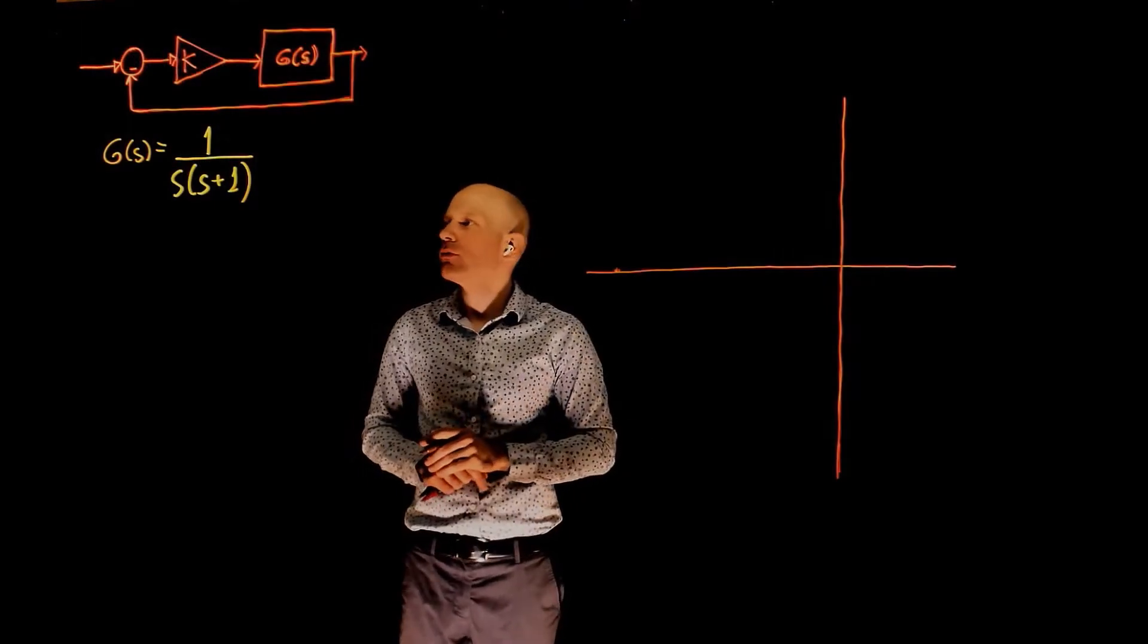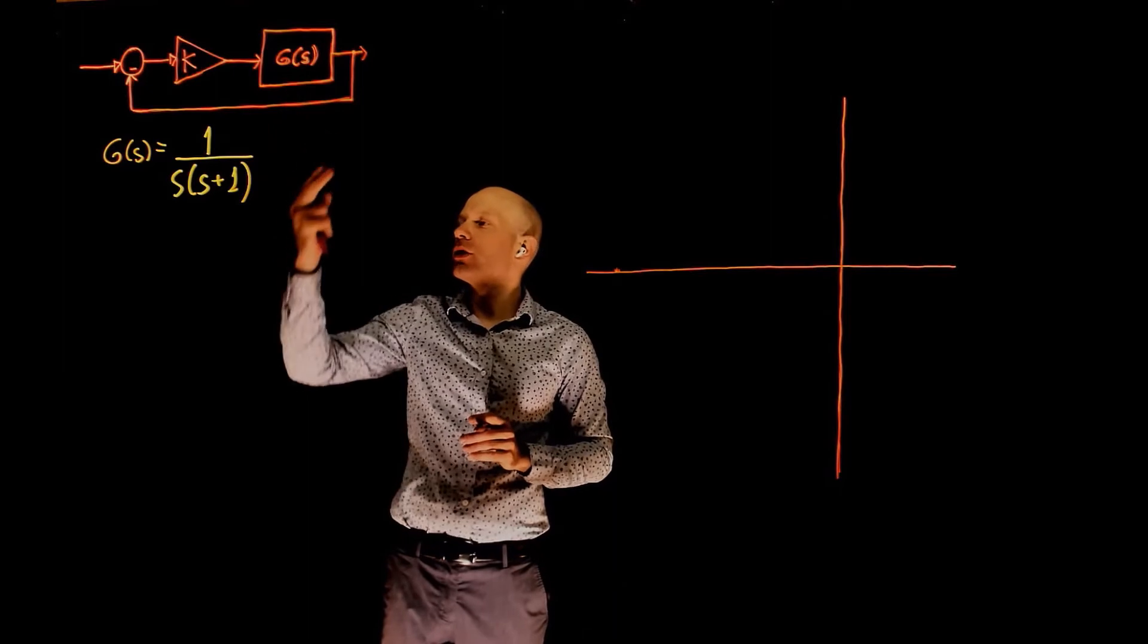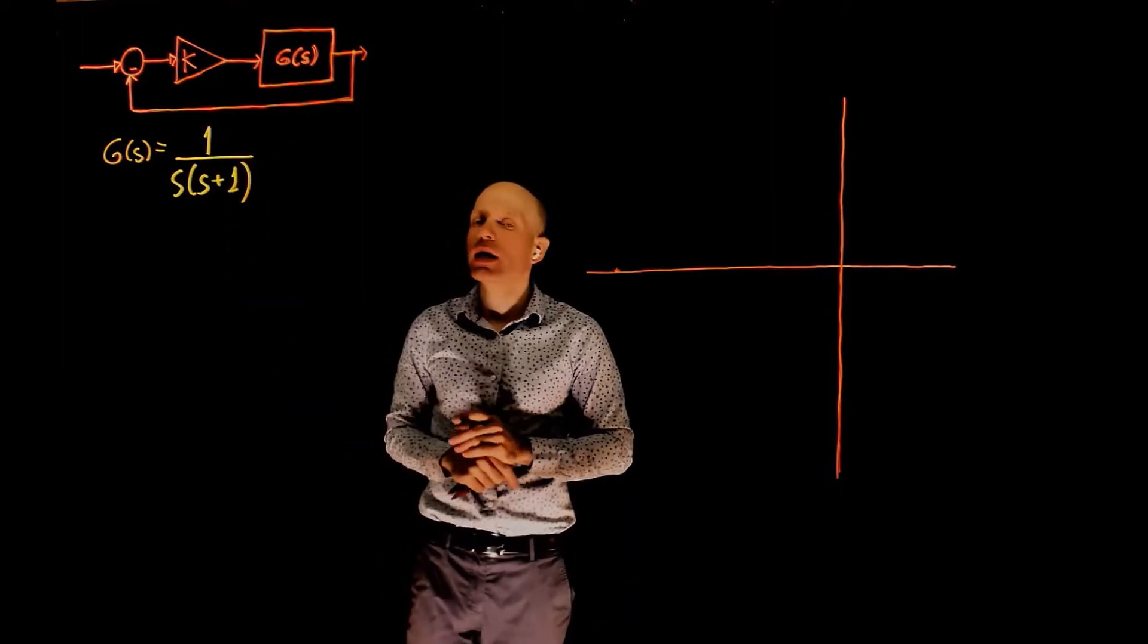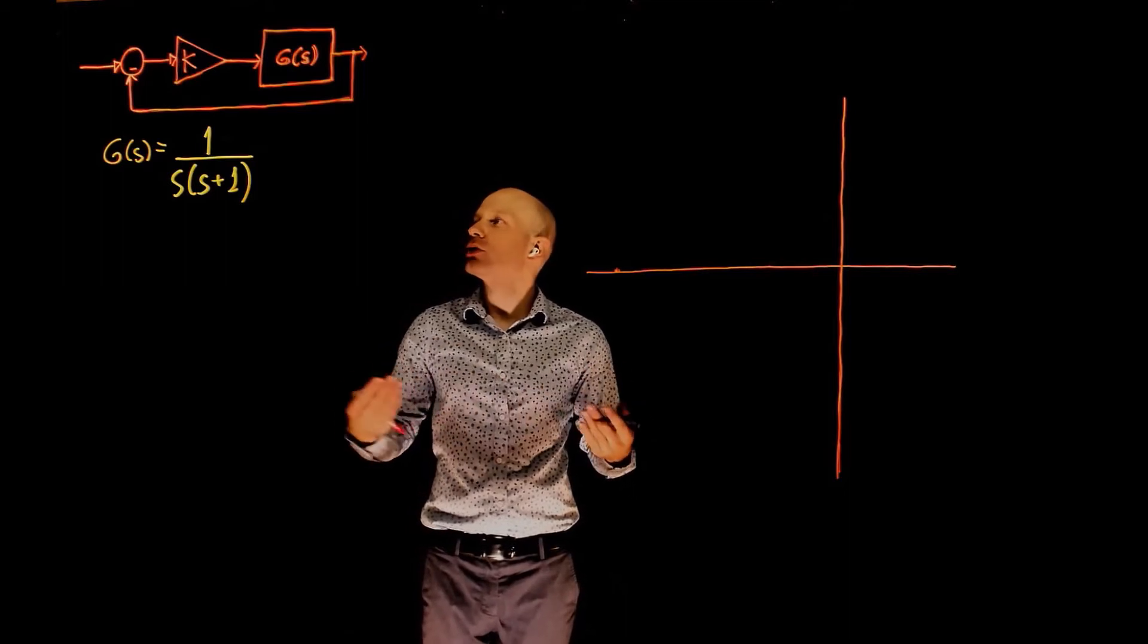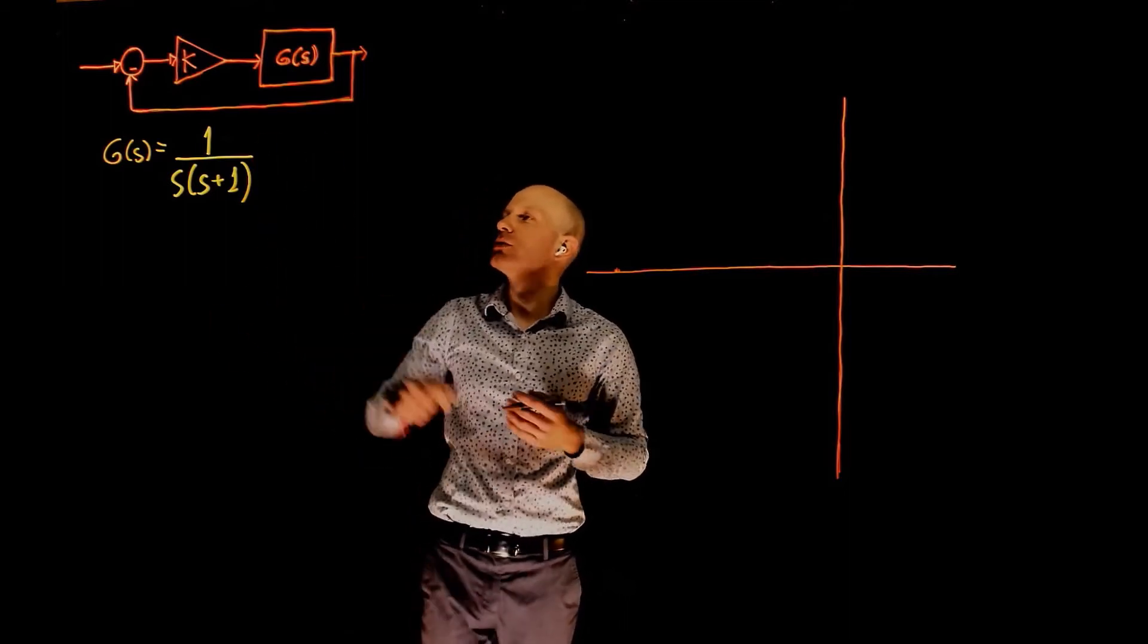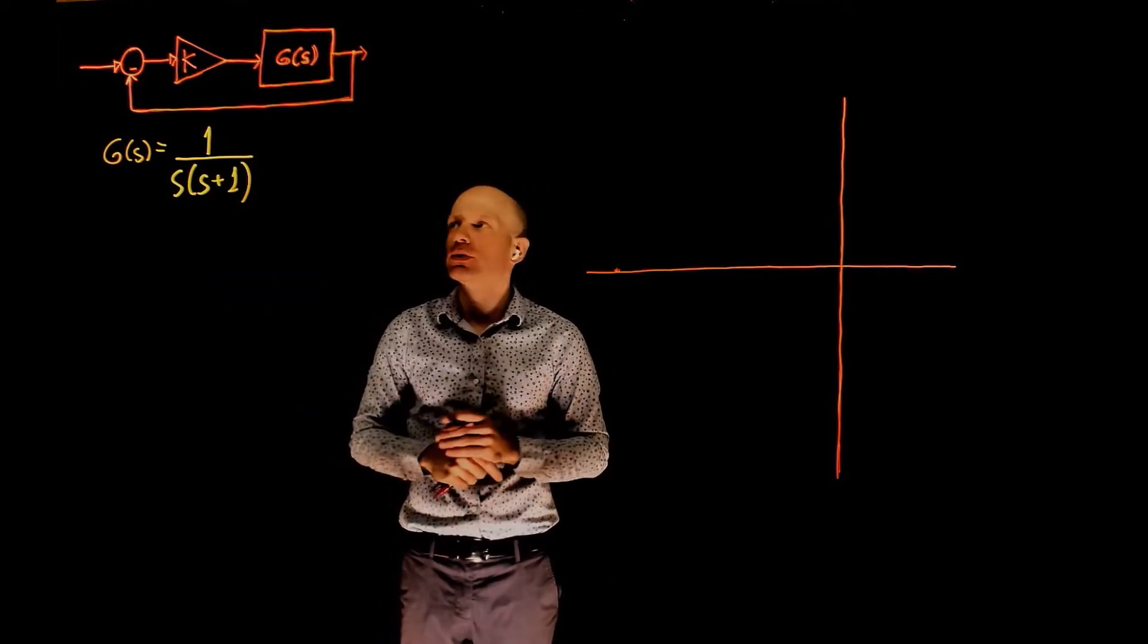Here we have another example, we are looking for the root locus of this closed loop system. We have the plant transfer function g of s and we have a control gain k. The root locus will represent the location of the poles of the closed loop transfer function as k goes from 0 to infinity.